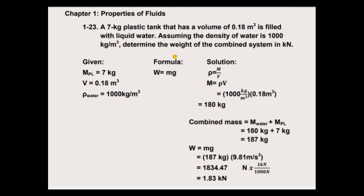So here we are going to solve the weight of the combined system in kilonewtons. First, identify our given values. We have the mass of the plastic tank, 7 kilogram, volume equals 0.18 cubic meter, and the density of water equals 1000 kilogram per cubic meter.